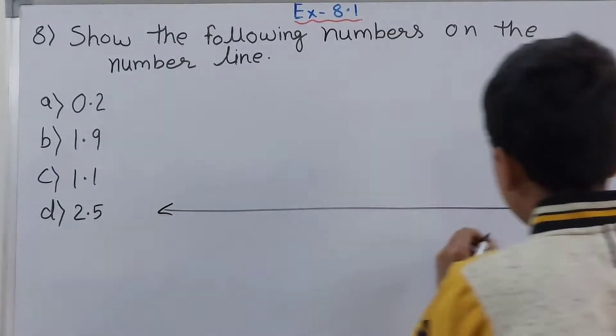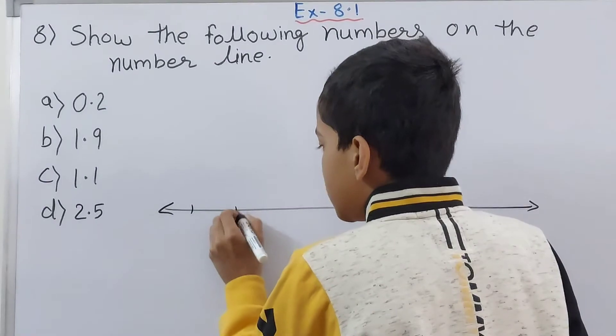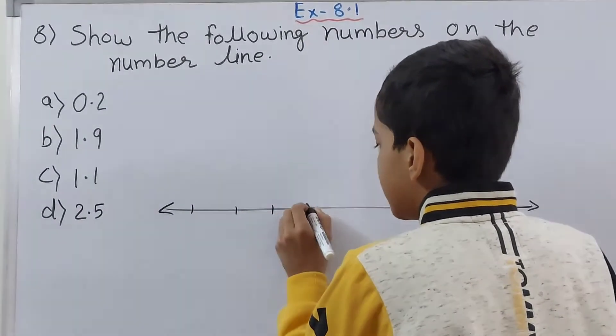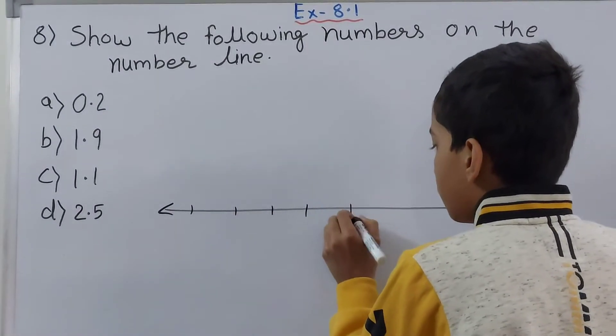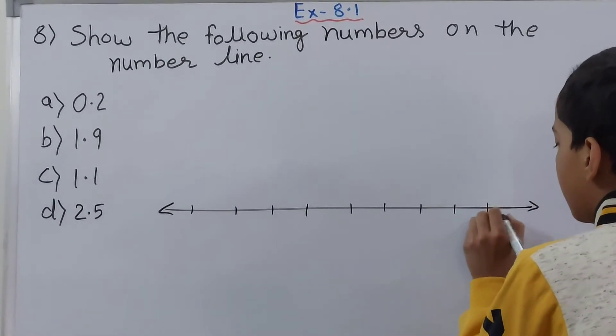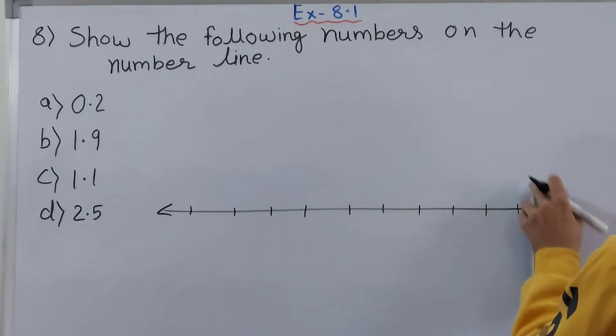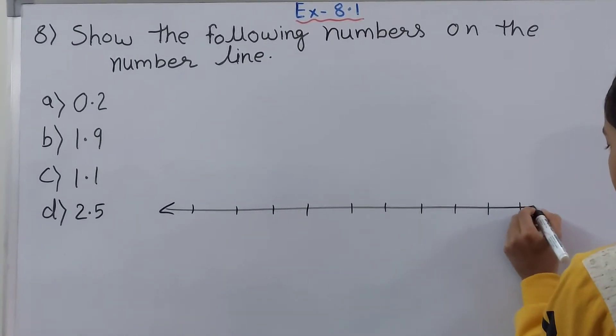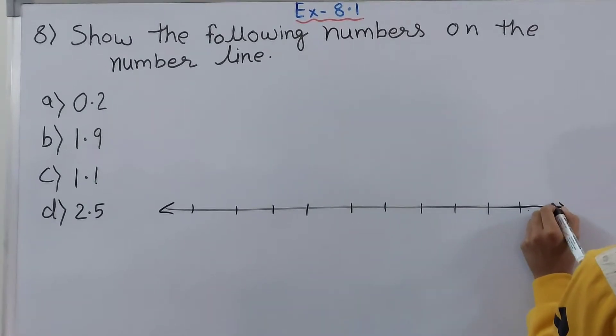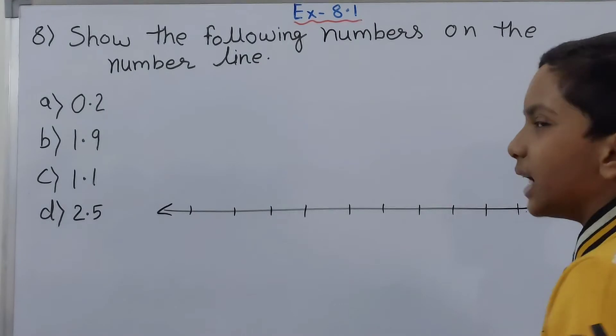Now let's draw the number line between them and see where does our decimal 0.2 lie. So this is the line and now let's divide this into 10 equal parts. 3, 4, 5, 6, 7, 8, 9, and 1 part is missing. I will extend this like this and there goes the 10th part. Alright, so this is divided into 10 parts.